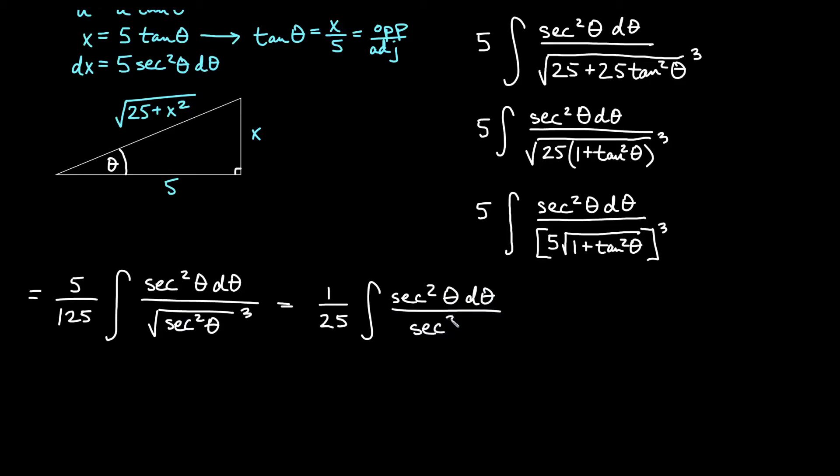Then I will have secant cubed theta on the bottom. And if we reduce two copies of secant from the top and the bottom, that will give us 1 over 25 integral d theta over secant theta.